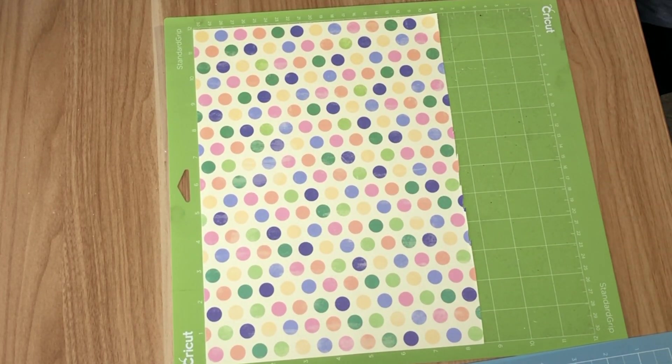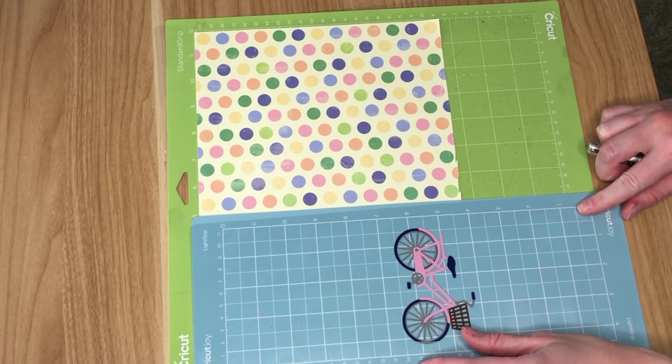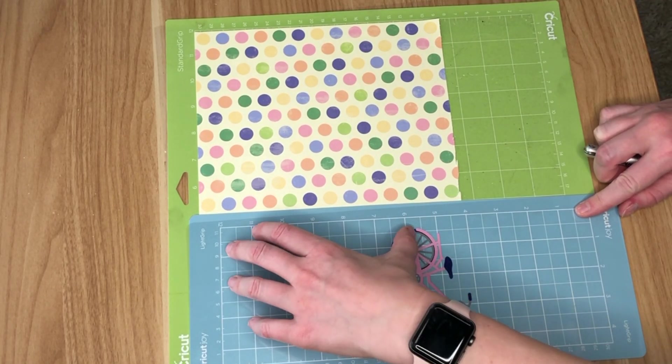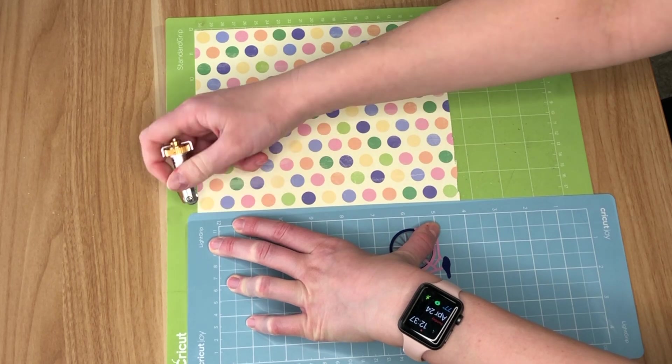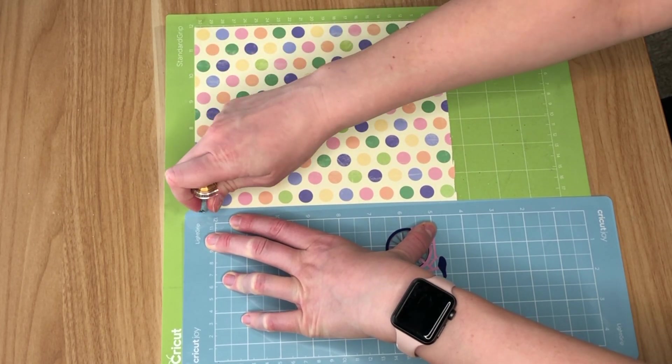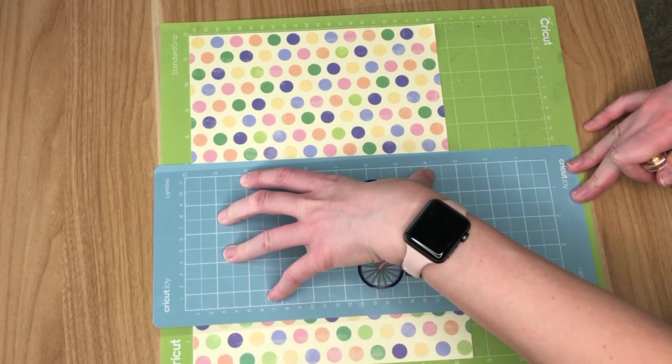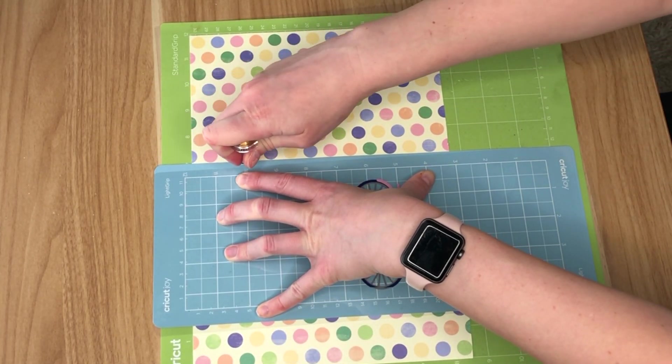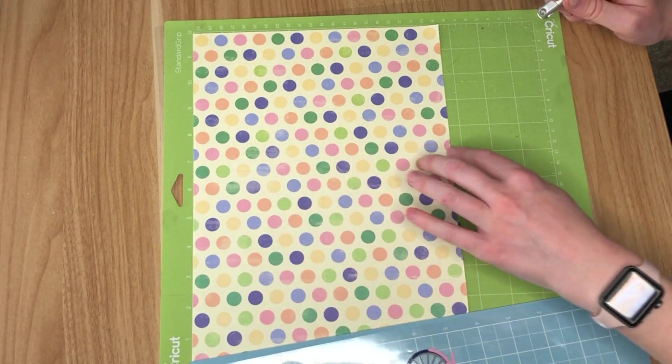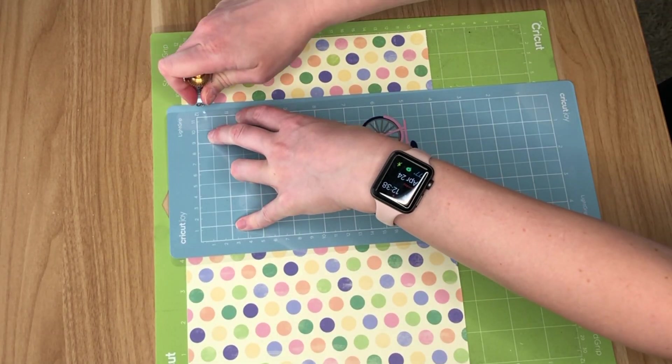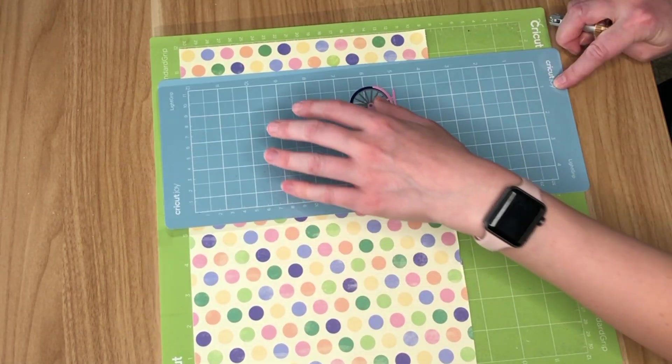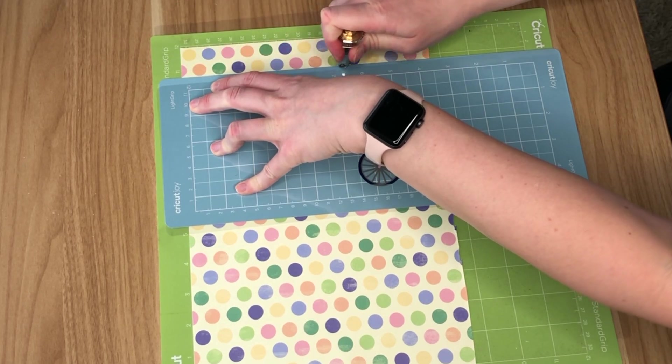So I am taking an eight and a half by twelve inch paper. It's cardstock, but you can use whichever one you would like. And we are going to be scoring parallel first to the eight and a half inch side. And I am scoring at one and a quarter inch, two and a half inch, five inch, seven inch, nine and a half inch, and then lastly at ten and three quarters of an inch.